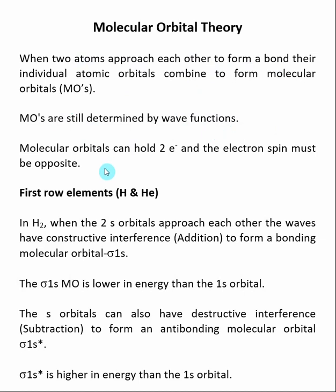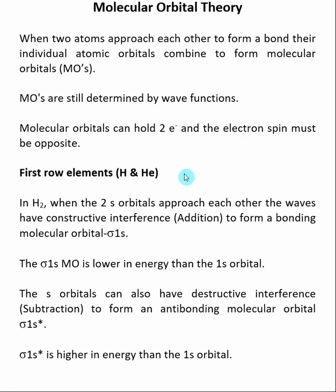Exactly like atomic orbitals, molecular orbitals can hold two electrons, and these two electrons must be spin opposite or spin paired. When discussing molecular orbital theory, what elements are involved in the bonding are very important. Here we're going to start our discussion by focusing on first row elements — where n is equal to one — which is hydrogen and helium.